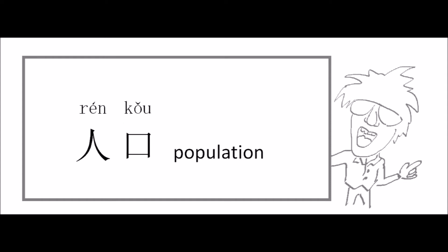And in this example, the third tone character 口 stands at the end of the phrase, so we still pronounce the complete third tone. So this phrase about population should be pronounced like 人口, 人口.